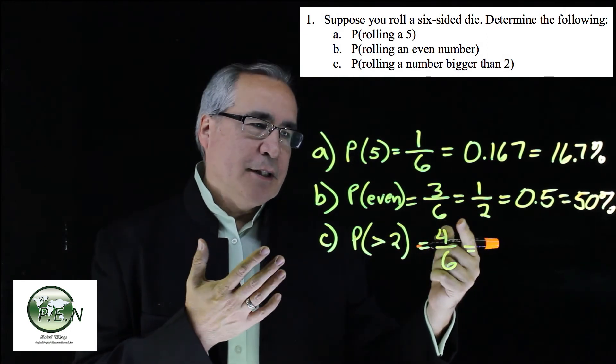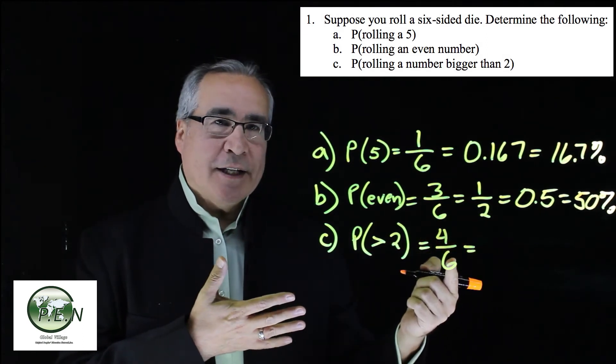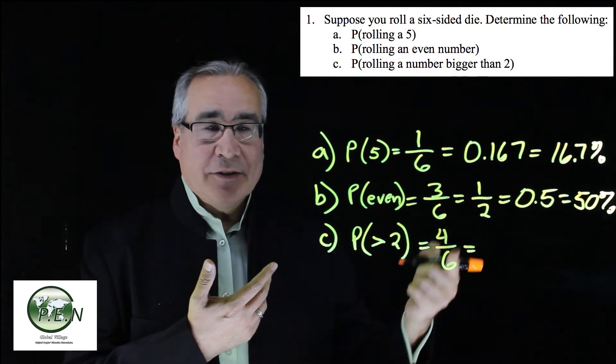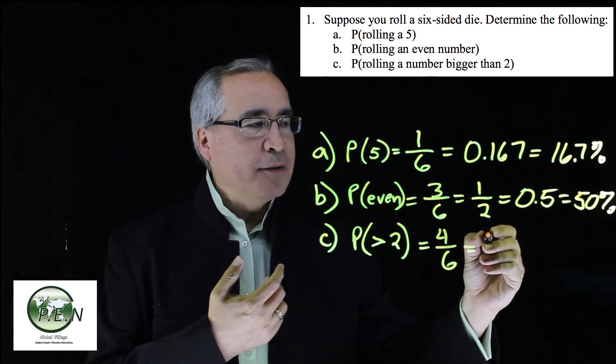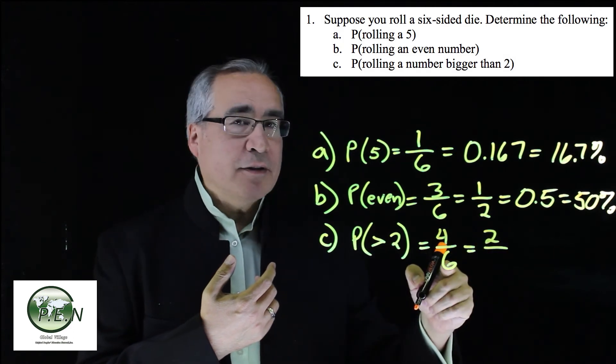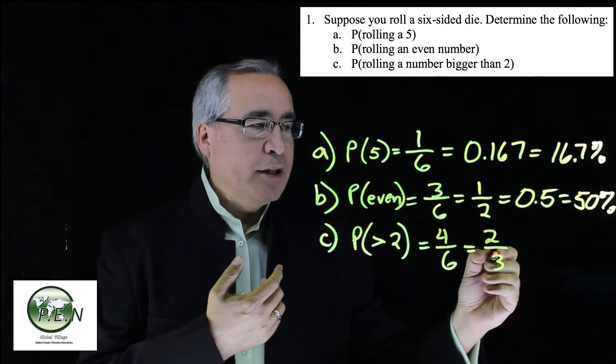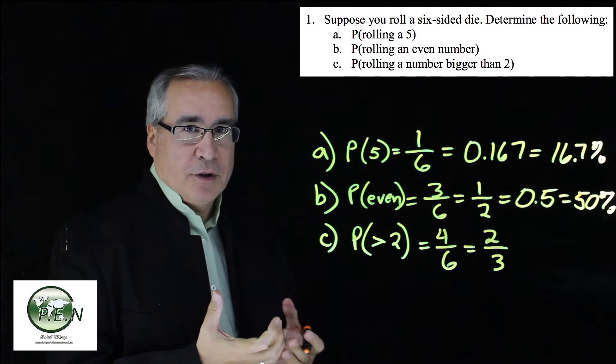4 divided by 6. Oh, let's see. You won't see that as the answer either because these can be reduced. 4 divided by 2. That's right. So that's going to give us a 2 in the top. 6 divided by 2 gives us a 3 in the bottom. You'll see the reduced answer of 2 thirds.